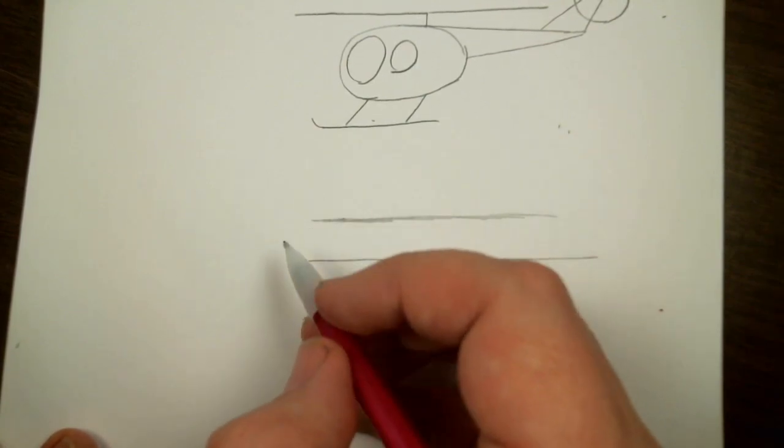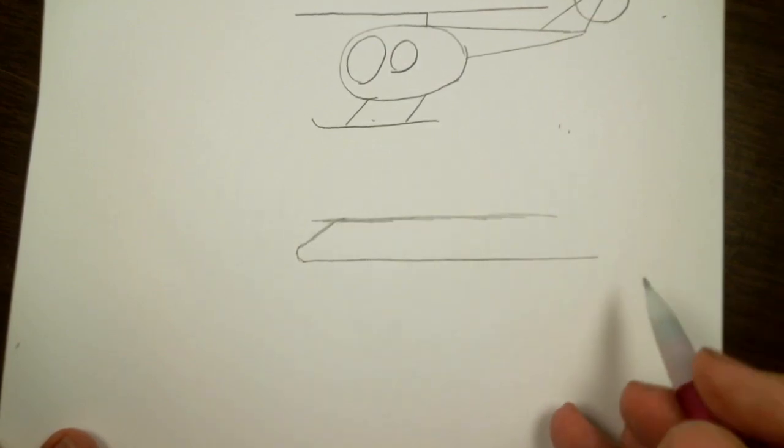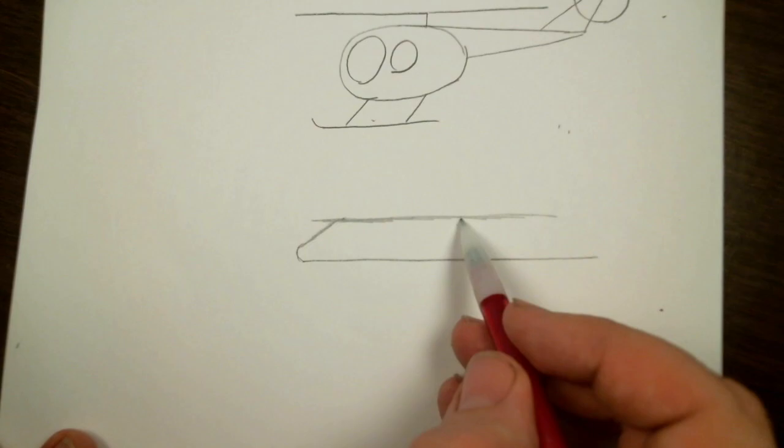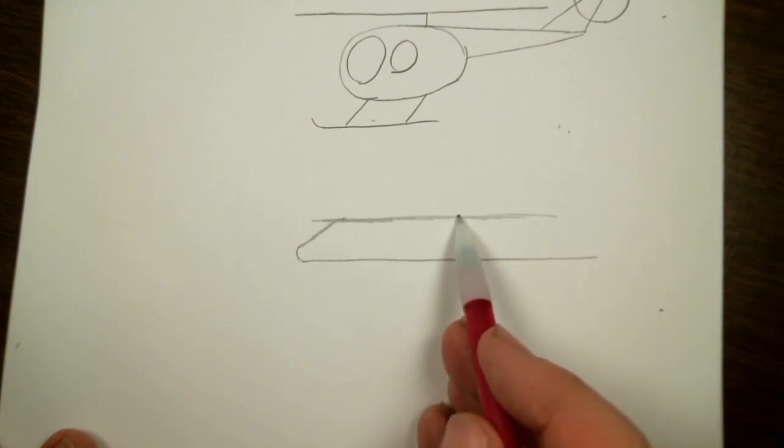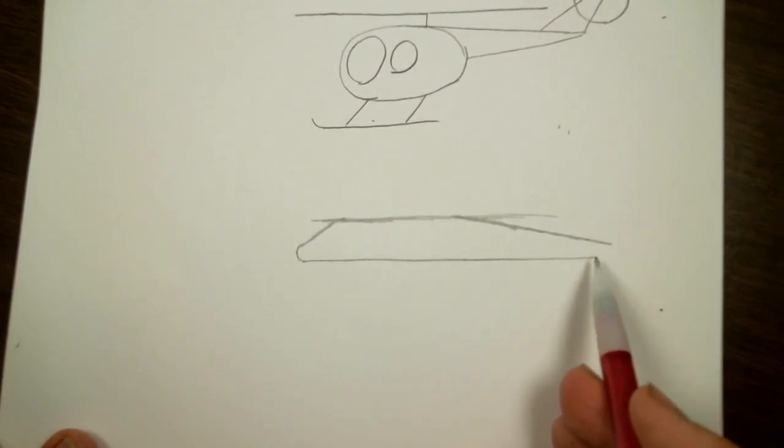And then we're going to define the nose like that. And then right about halfway we're going to make the line go straight down near the ends. We can make a blunt point.